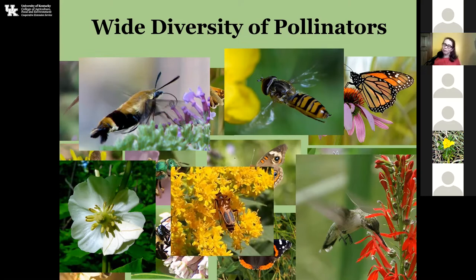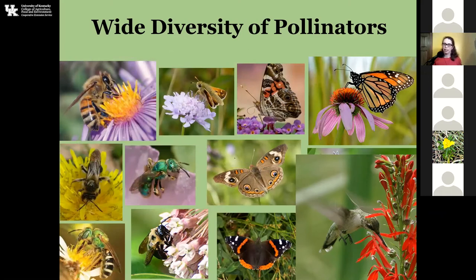So we're going to accept the reality of things. Today we're just going to talk about the butterflies, the bees, and the hummingbirds when we're talking about pollinators. And really, if you apply the concepts I'm going to give you and have this wide diversity of plants, you're going to attract everything else as well.